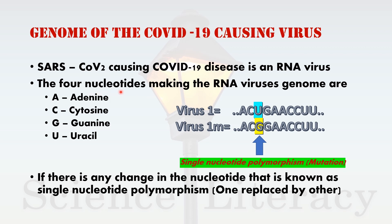The four nucleotides making the RNA virus's genome are adenine, cytosine, guanine, and uracil. Here I would like to tell you about single nucleotide polymorphism, which is a mutation. For example, in the genome, uracil is replaced by guanine. If there is any change in a nucleotide, that is known as single nucleotide polymorphism — one replaced by another.